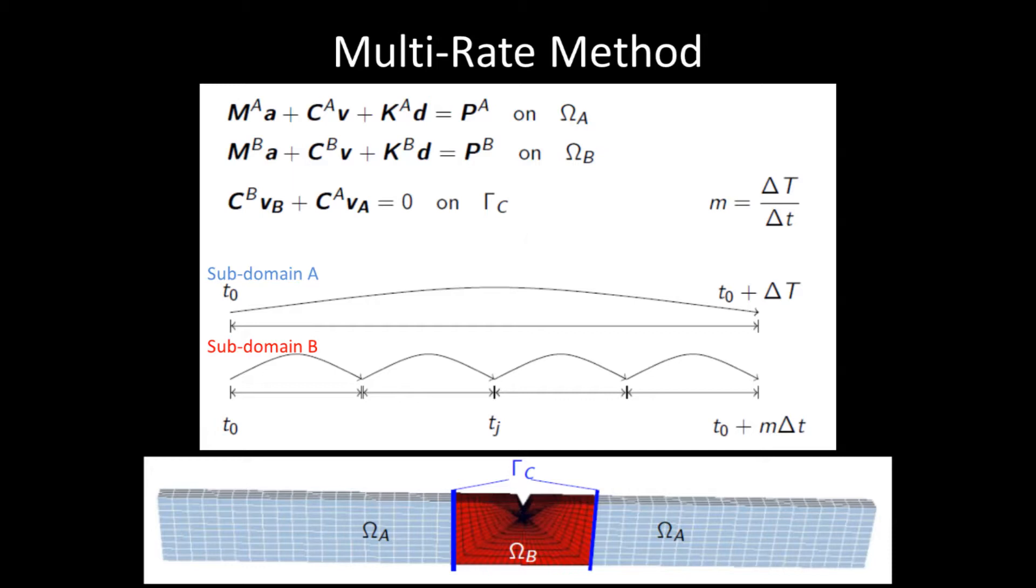Subdomain A is advanced through the large time step, delta capital T, and subdomain B is advanced through the small time step, delta lowercase t. Once they have reached the same point in time, the two solutions are reconciled with each other with the coupling terms C. Using this method, we are able to accurately solve both subdomain A and subdomain B at appropriate time steps, without using the additional computational resources to solve subdomain A at every small time step.